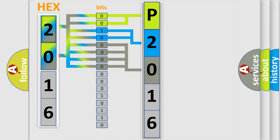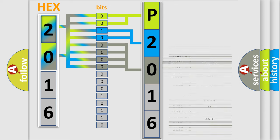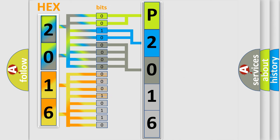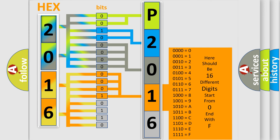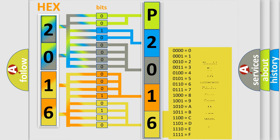The second byte is composed of a combination of eight bits. The first four bits determine the fourth character of the code, and the combination of the last four bits defines the fifth character. A single byte conceals 256 possible combinations.